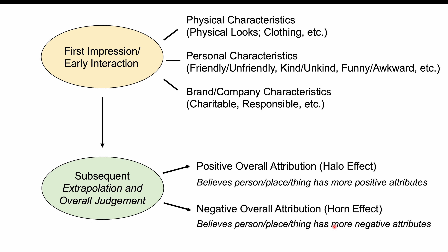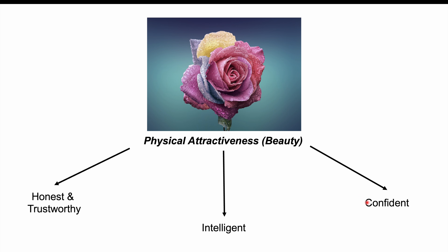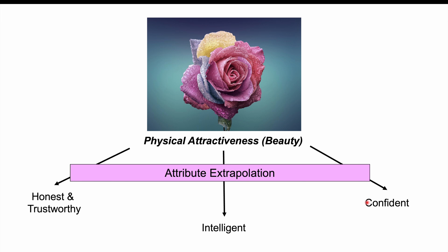Let's look at a couple of examples. If you were presented with somebody for the first time and physical attractiveness is prominent — they're beautiful or handsome — you will start to have biases toward thinking more positively about that person even if you know nothing about them. If that person is physically attractive and you know nothing else about them, you can make assumptions that they're more honest, trustworthy, intelligent, and confident than you actually know. This is what I would term attribute extrapolation — seeing one positive thing and extrapolating other positive attributes. This is the halo effect.